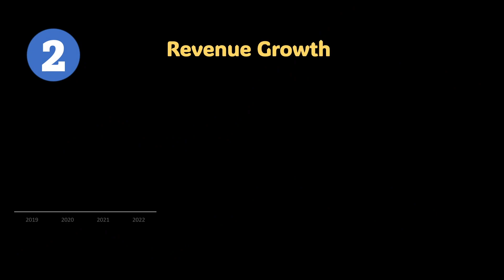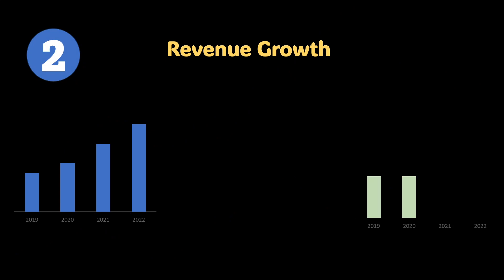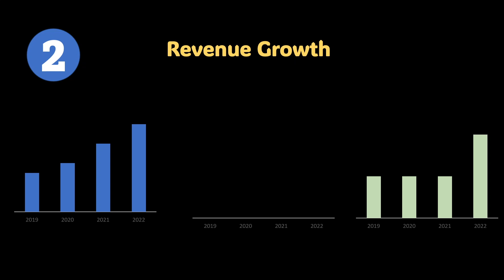I've discussed three types of revenue growth here. Number one: it's a consistently growing company revenue. In the last three years, a company is very constant with heavy growth. Before COVID levels — in 2018-2019 — we had a lot of good sales records.